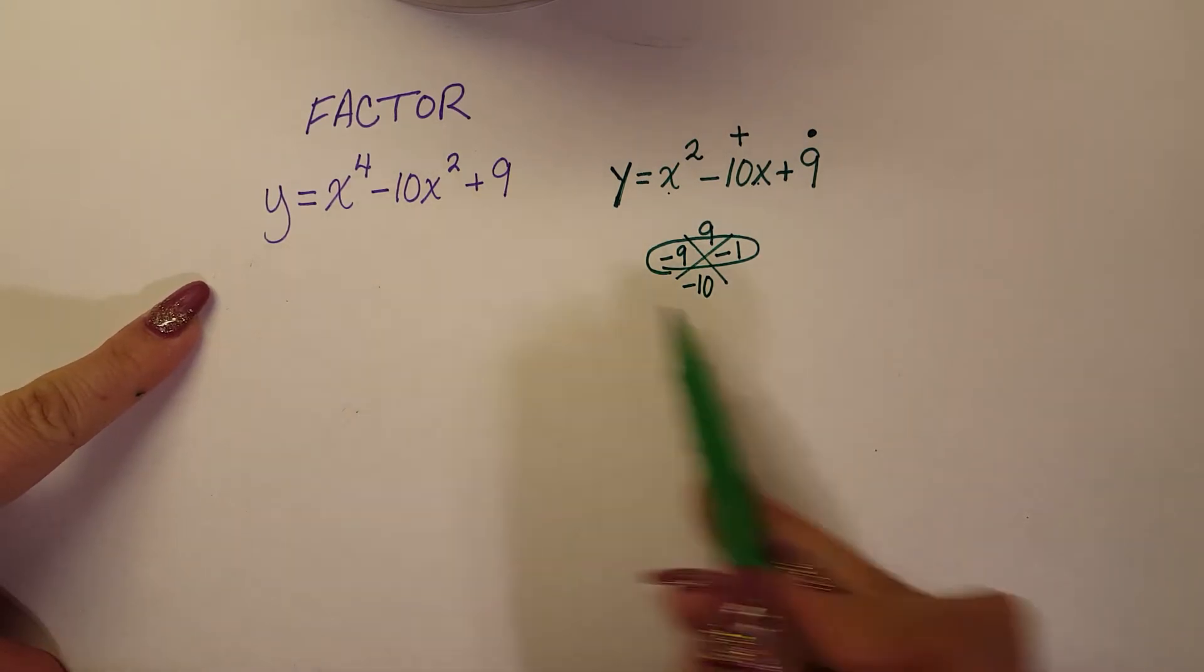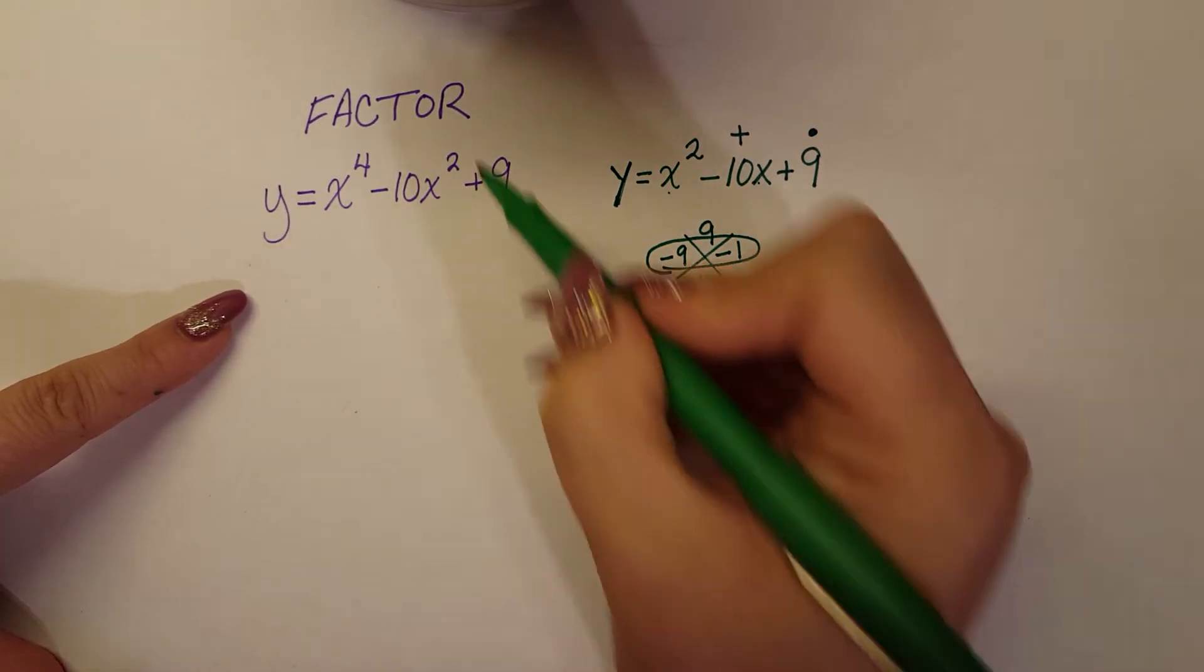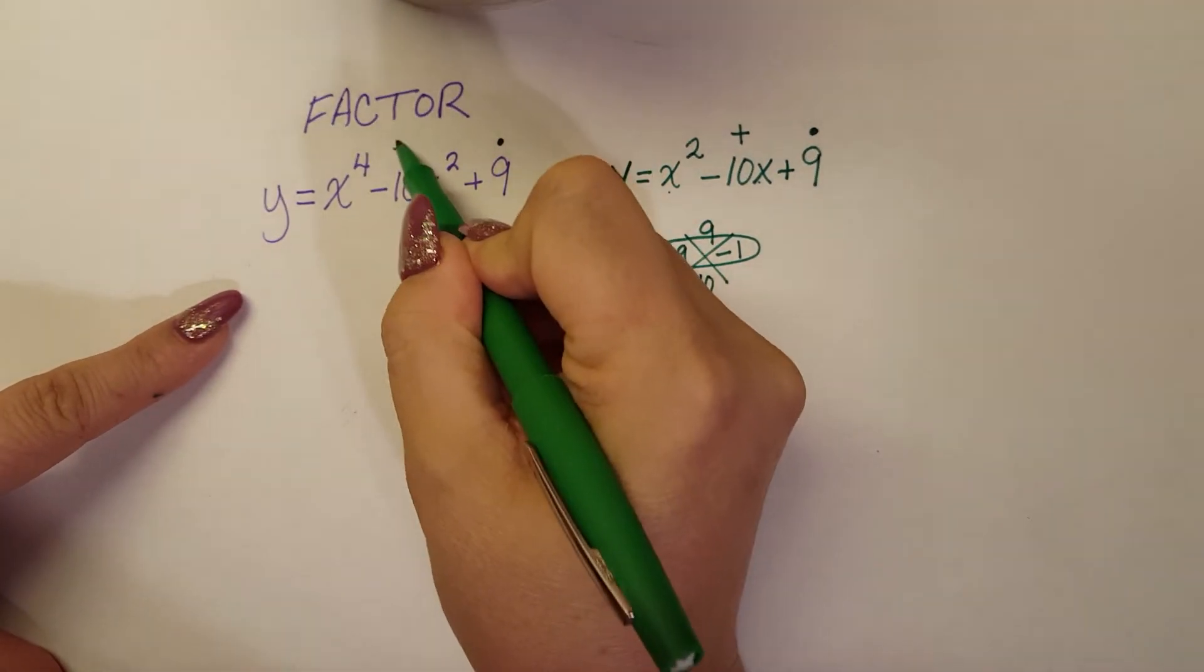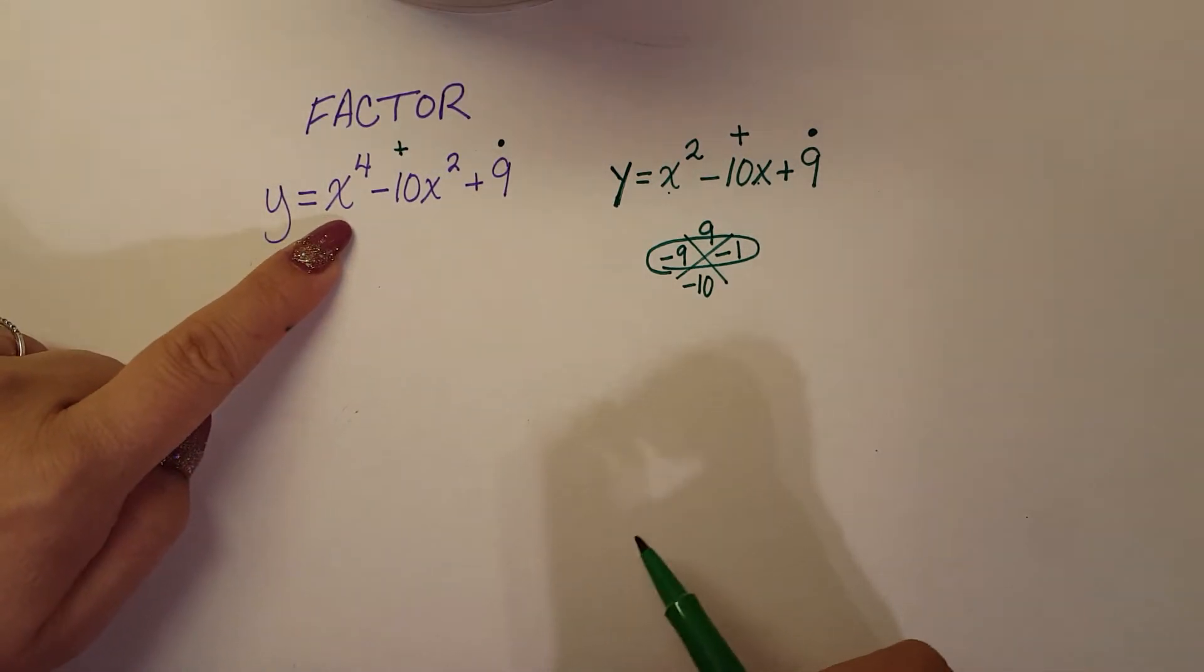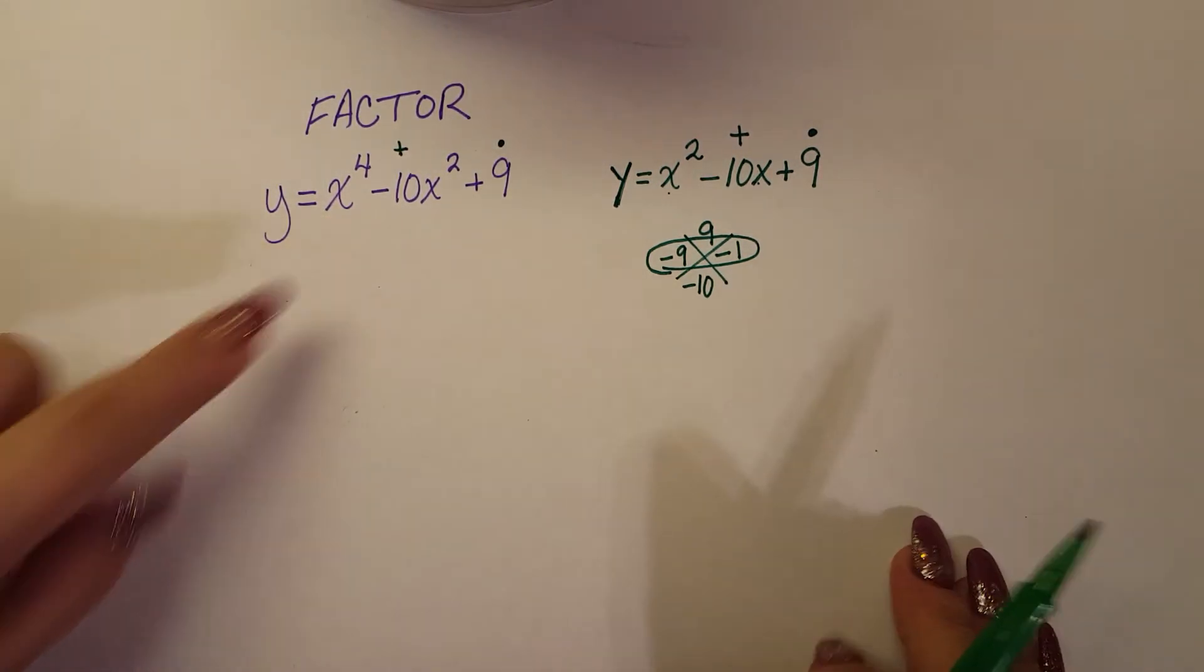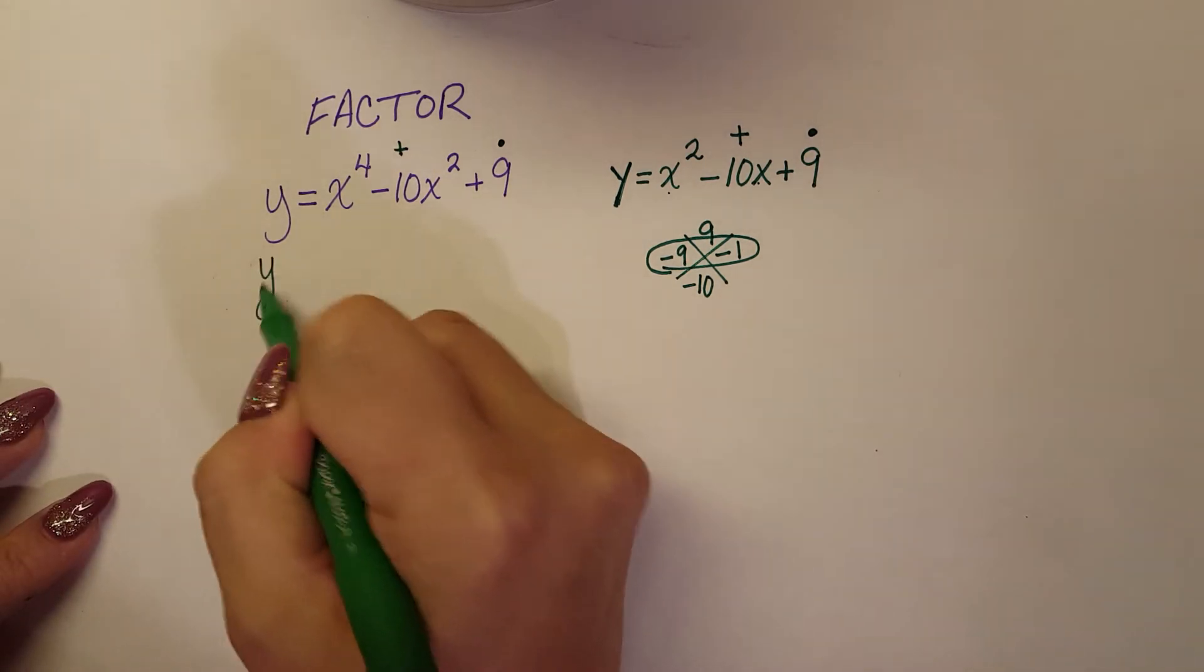So moving that same idea over, same idea. What multiplies to 9 and adds to negative 10? I understand we have x to the fourth here, but that's going to come into play once we break it down. So that gives us y equals, we're going to set it up.